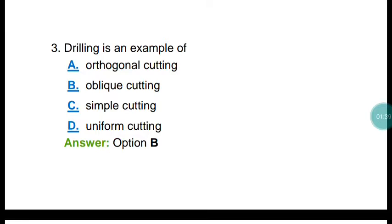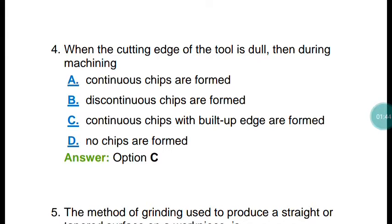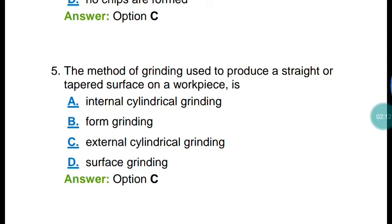Question number three: drilling is an example of what? Yes, drilling is an example of oblique cutting. Question number four: when the cutting edge of the tool is dull, during machining what happens? The correct answer is option C — continuous chips with built-up edge are formed.